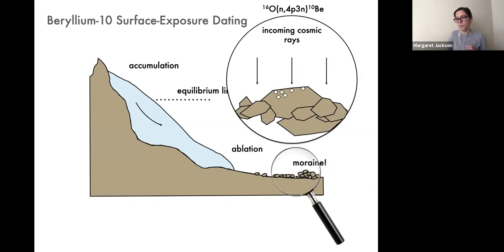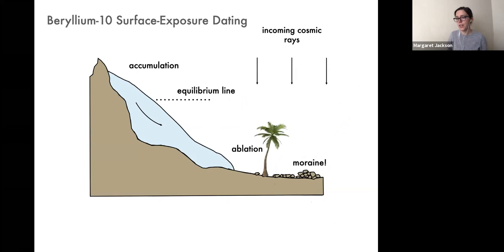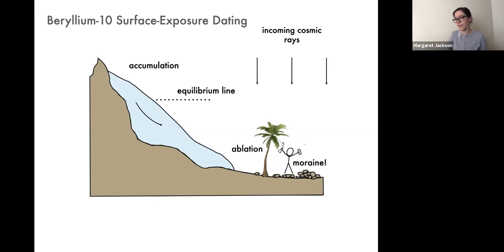Over time, these atoms of beryllium-10 build up, accruing in the rock surface. If we know the rate at which this process occurs, then sometime later — well after the glacier has retreated — we can collect a sample of the rock surface itself and determine the concentration of beryllium-10 atoms. From that, we can calculate the total duration of exposure of the rock to incoming cosmic rays, effectively dating exactly how long ago that rock was deposited by the glacier.